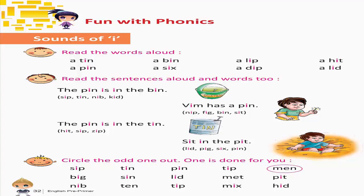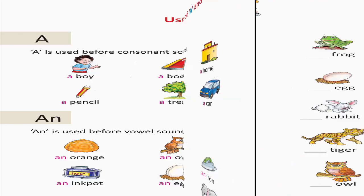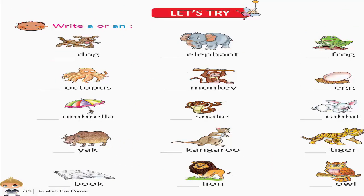Circle the odd one out — one is done for you. Use of A and An. A is used before a consonant sound: A boy, A book, A home, A pencil, A tree, A car. An is used before a vowel sound: An orange, An owl, An iron, An inkpot, An egg, An elephant. Let's try — Write A or An.